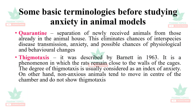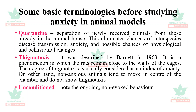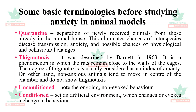Thigmotaxis was described by Barnett, a scientist, in the year 1963. It is a phenomenon in which the rats remain close to the walls of the cages. The degree of thigmotaxis is usually considered as an index of anxiety. On the other hand, non-anxious animals tend to move freely in the center of the chamber and do not show thigmotaxis.